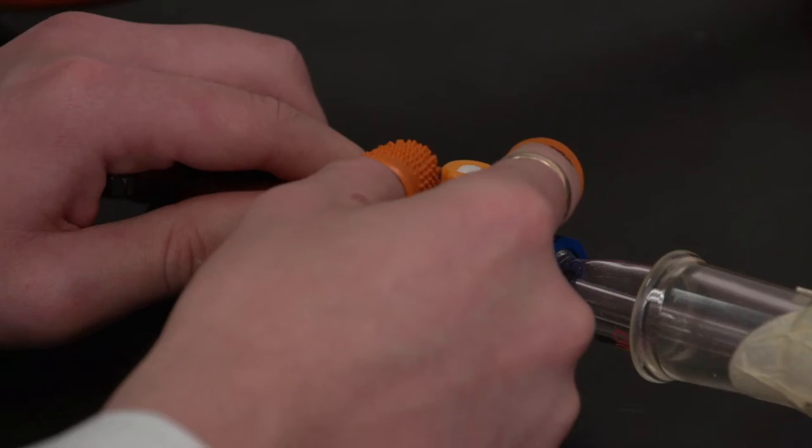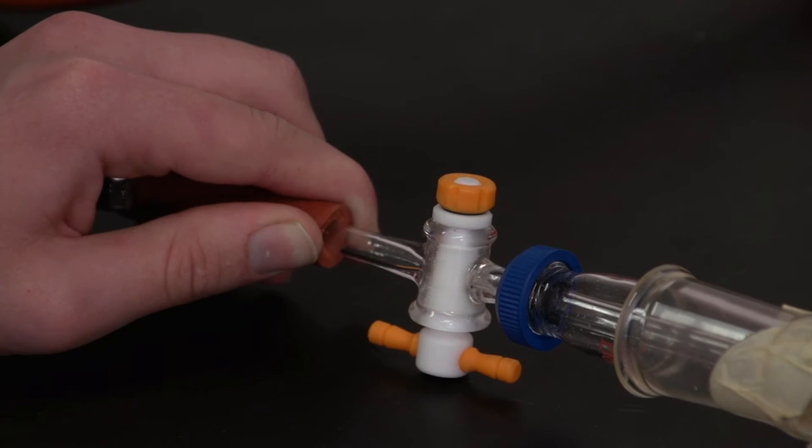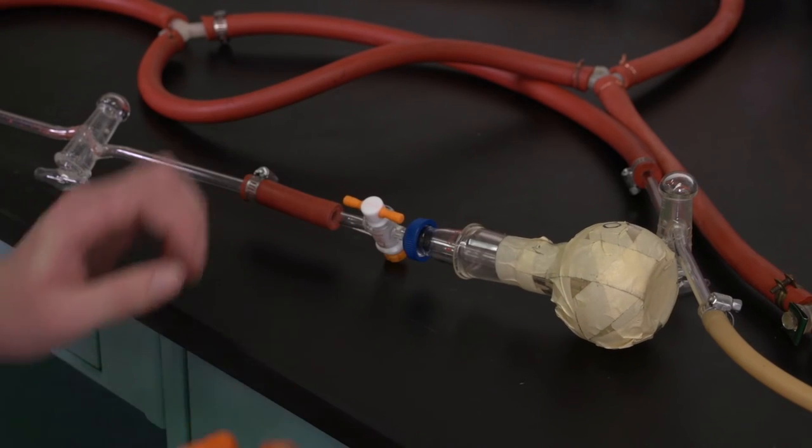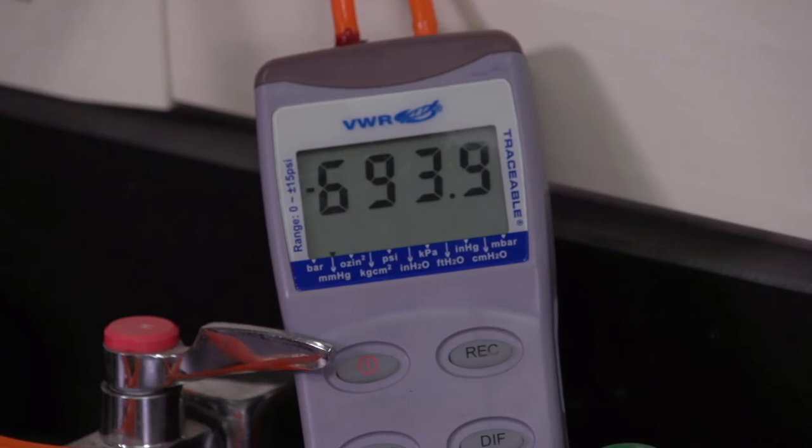To fix the leak, tighten all nuts on the stopcocks and make sure the bottle is firmly attached. Evacuate the system again.